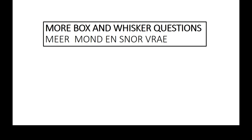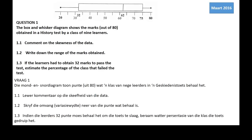More box-and-whisker questions. The box-and-whisker diagram shows marks out of 80, so the maximum mark is 80. Comment on the skewness of the data: the median is at 62, so it has moved to the right. Therefore our data set will be negatively skewed or skewed to the left.